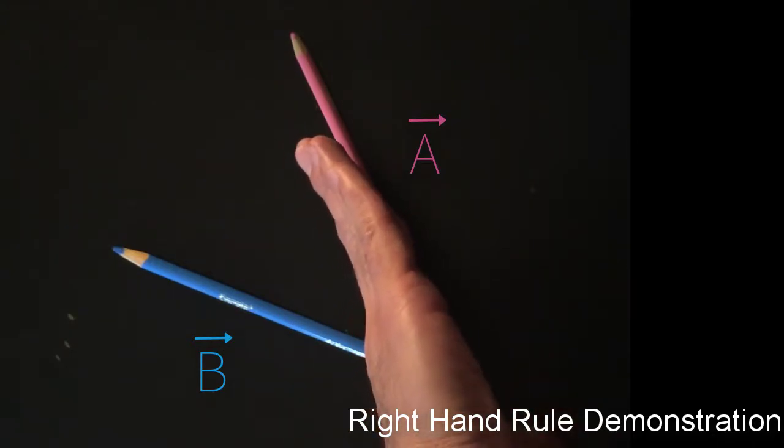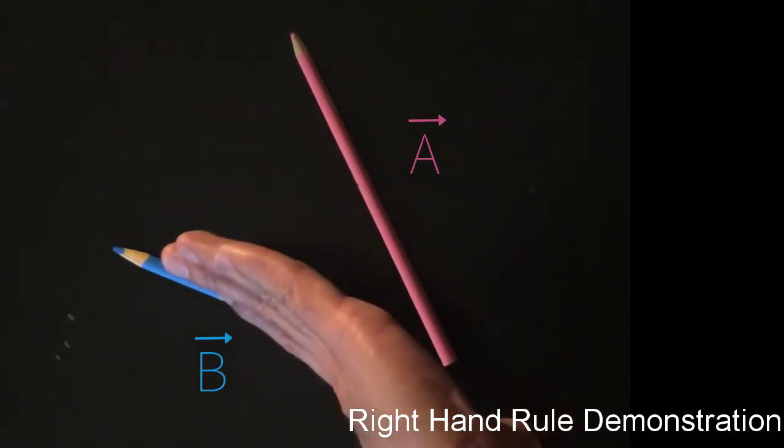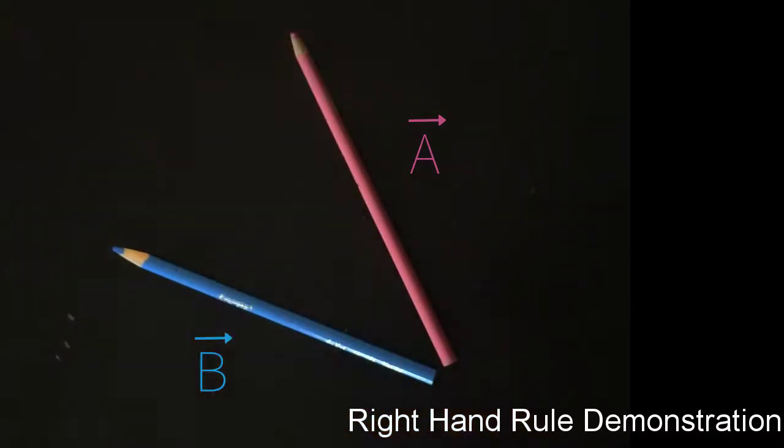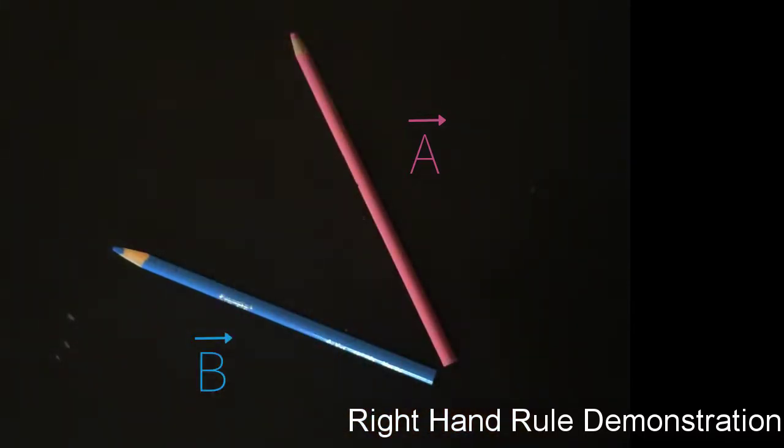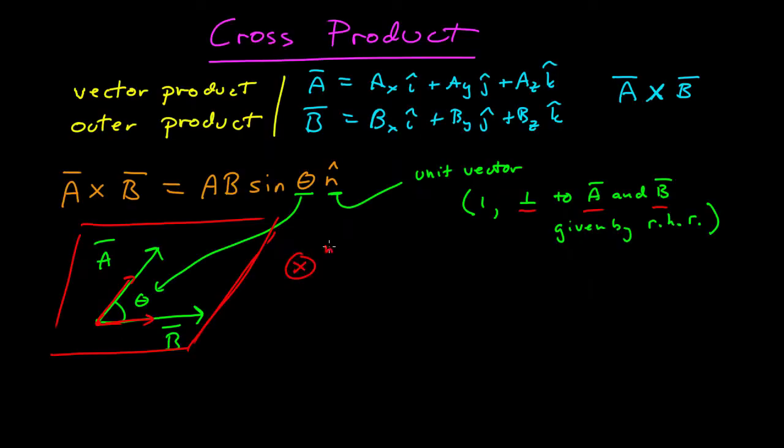And in this case, my thumb points in the direction of the resulting vector that is going to be into the screen or into the surface. And if we do that, we find n-hat is into the screen, or say into the page, sort of historically thinking about reading a book.